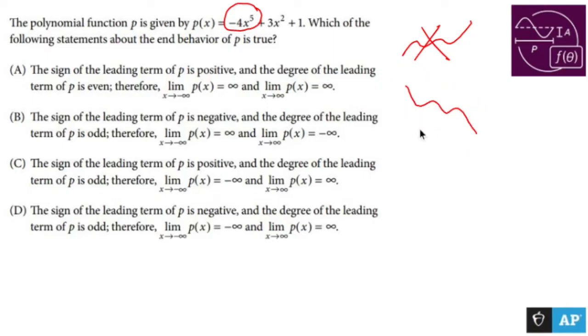So the end behavior as it's going to the left is infinity, and as it goes to the right is negative infinity. So we need to pick the guy that works for that.